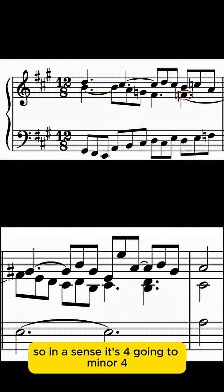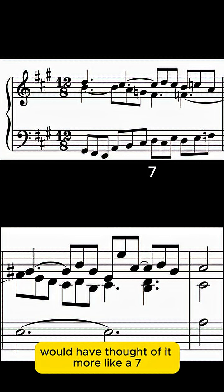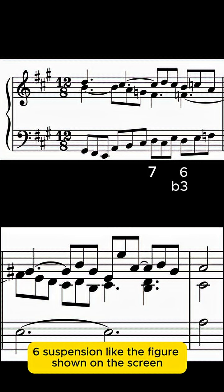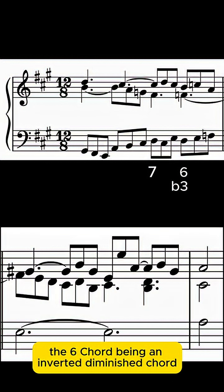So in a sense, it's 4 going to minor 4, but Bach, being a thorough bass man, would have thought of it more like a 7-6 suspension, like the figures shown on the screen. The 6 chord being an inverted diminished chord.